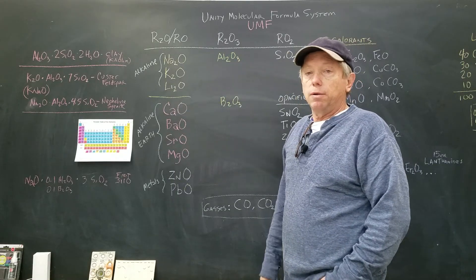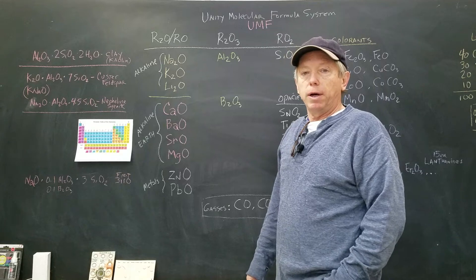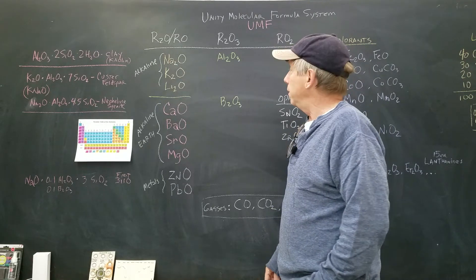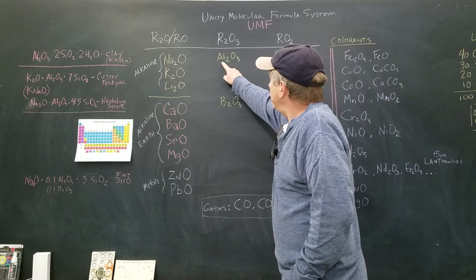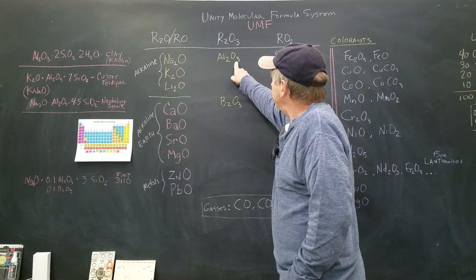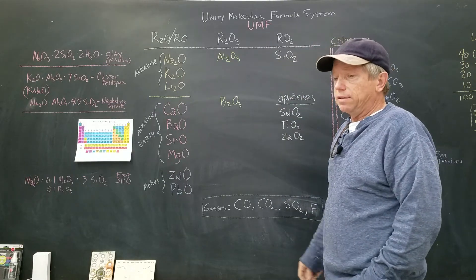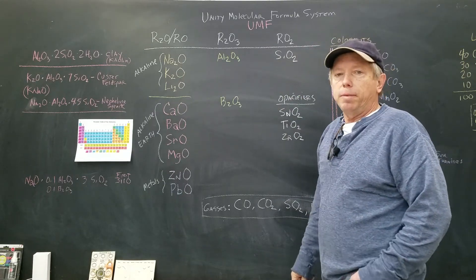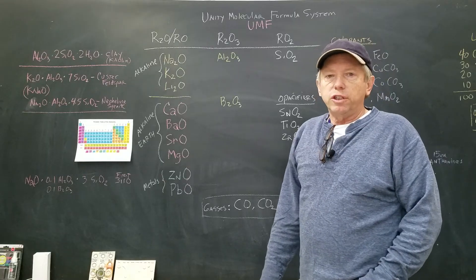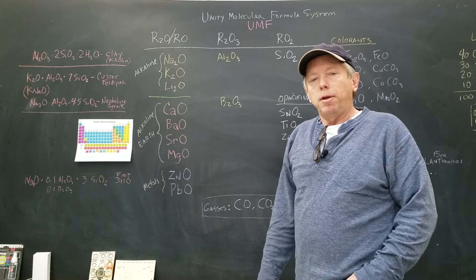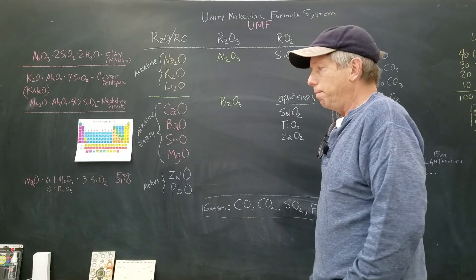The next thing we want to talk about is refractory. Those are the non-melters, the stabilizers or refractories. That's represented by Al2O3. Then we have the glass former SiO2—that's silica. You can have many glass formers: arsenic, germanium, boron, phosphorus, but our main one is going to be silica.